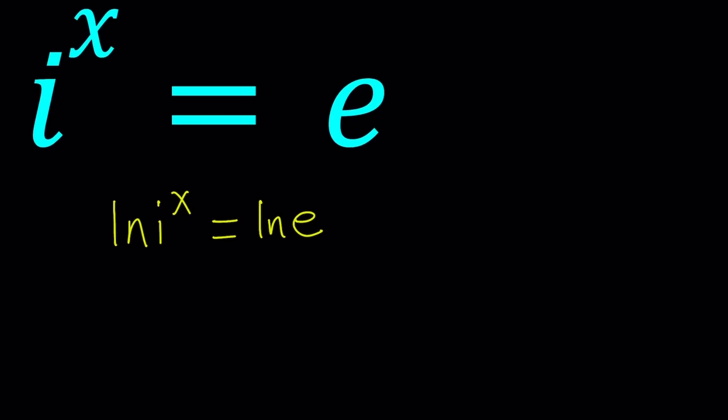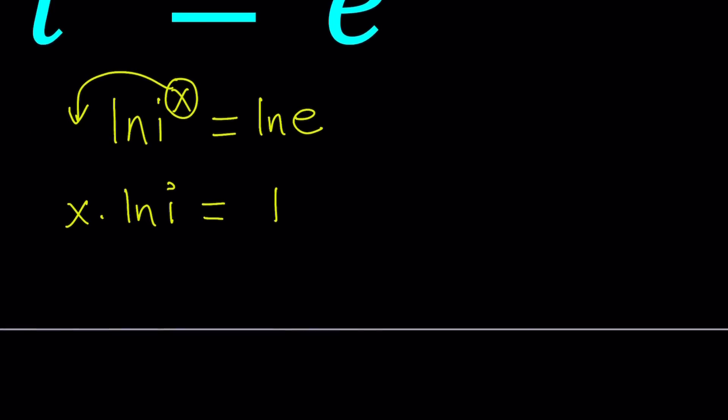And then from here, if you move the x to the front, you're going to get x times ln i equals ln e, which is 1, right? So from here, simply put, x is just going to equal 1 over ln i.